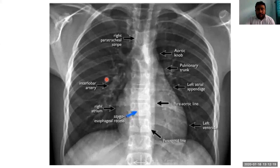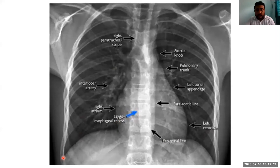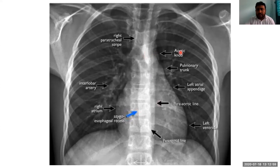These are the bronchoalveolar markings of the lung parenchyma, visible on both sides. Lastly, you can see both domes of the diaphragm, the cardiophrenic angle, and the costophrenic angle. These are the basic things to identify in a chest X-ray.